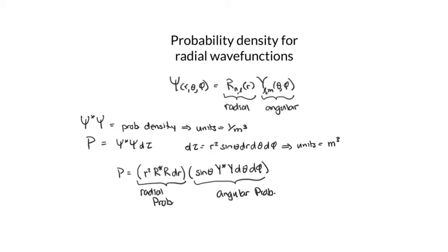Let's take a look at the solutions to the hydrogen atom, which have a radial part and an angular part, and see what we can learn about the probability of electrons being in particular places around the nucleus. Psi star psi gives us the probability density for the electron in space, and because this is a three-dimensional r, theta, and phi wave function, the units of that probability density are the probability per unit volume.